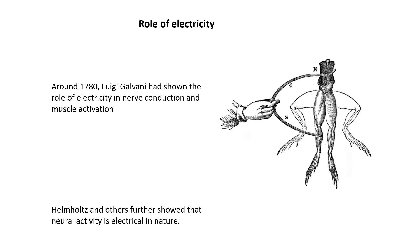So far we have seen how we came to know how the brain is organized — in terms of various brain regions down to the level of neurons — based on the work of people like Vesalius, and later Golgi and Cajal. Now let's think about how the brain functions. One of the key things we know now is that electrical activity plays an important role in brain function. The first hints about this were seen in 1780, much before we even knew there were neurons, based on the work of Galvani and his colleagues.